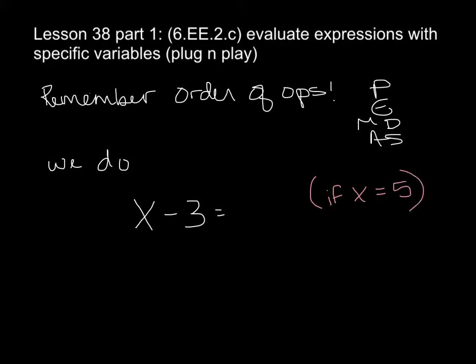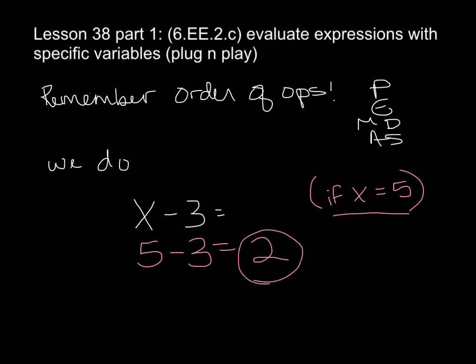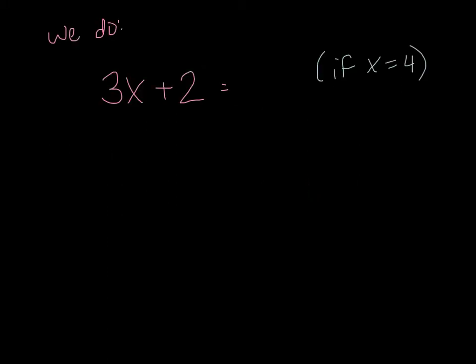Now that you have the secret, you're going to go ahead and plug it in. We're going to do x minus 3, but x equals 5. So I'm going to plug in 5 for x — it's not a mystery anymore. Plug it in, play the math: 5 subtract 3 is 2. That's it. That can't be that easy, can it? Oh yes, it can. Let's look at another one.